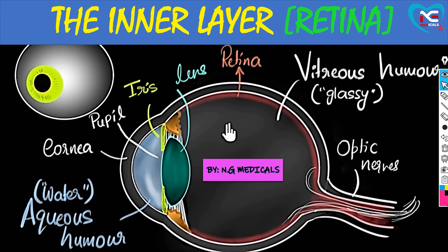In this video, we have already discussed about the outer and the middle layer. The outer layer was made with sclera and cornea. The middle layer was made with three things: this single layer you are seeing is the cornea, the bundles you are seeing is the ciliary body, and this yellow color extension is the iris. This is the middle layer.